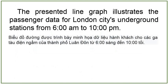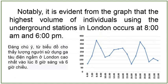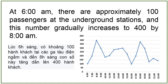The presented line graph illustrates the passenger data for London City's underground stations from 6 a.m. to 10 p.m. Notably, it is evident from the graph that the highest volume of individuals using the underground stations in London occurs at 8 a.m. and 6 p.m. At 6 a.m., there are approximately 100 passengers at the underground stations and this number gradually increases to 400 by 8 a.m.